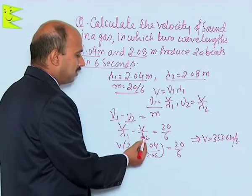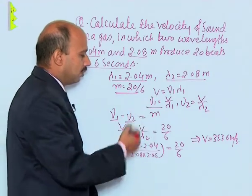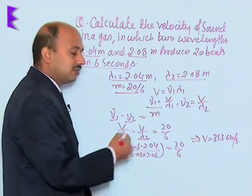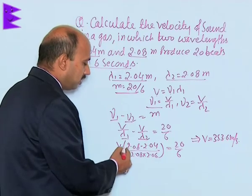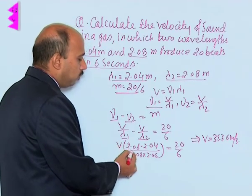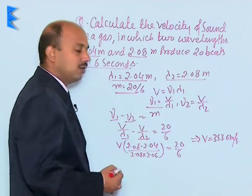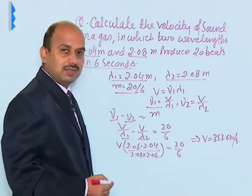Here, V upon lambda 1 minus V upon lambda 2 is equal to 20 by 6. Putting the value of lambda 1 and lambda 2 and taking LCM, we have got this equation: V into 2.08 minus 2.04, which is 0.04, upon 2.08 into 2.06 is equal to 20 by 6.